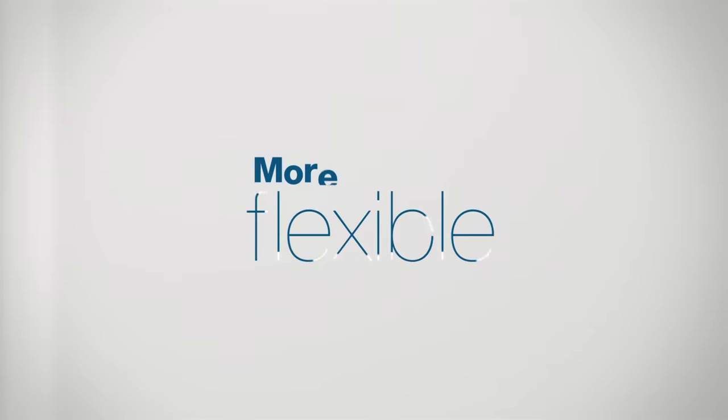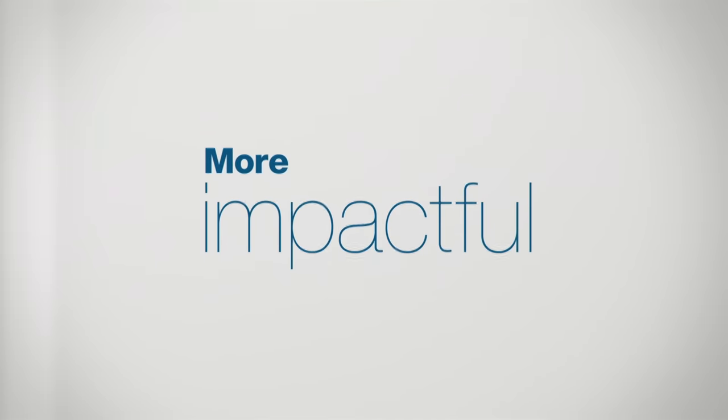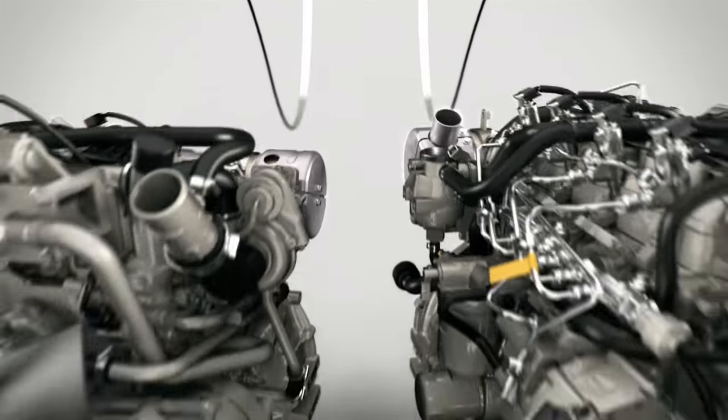Technological innovation can follow one of two paths: complication or simplification. At Perkins, we believe in simplifying. That's why we're constantly evolving our technology to make it easier, more flexible, and more impactful, introducing the next generation of simplicity and reliability for compact machinery.